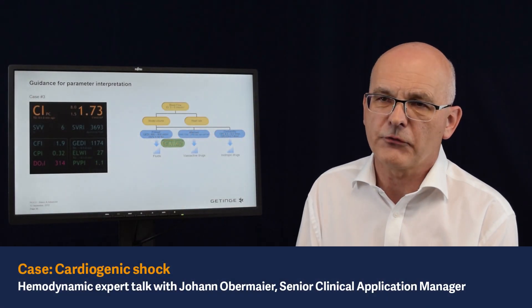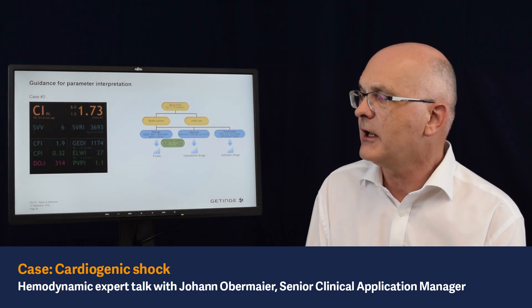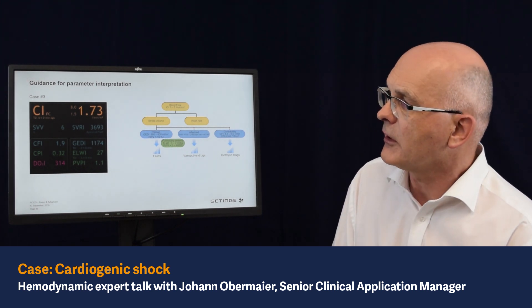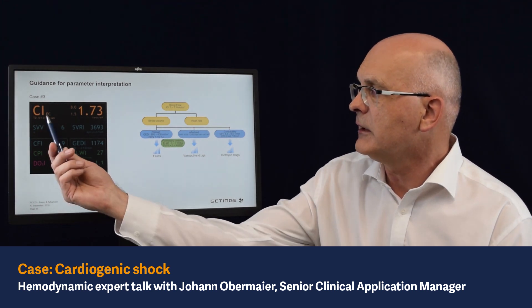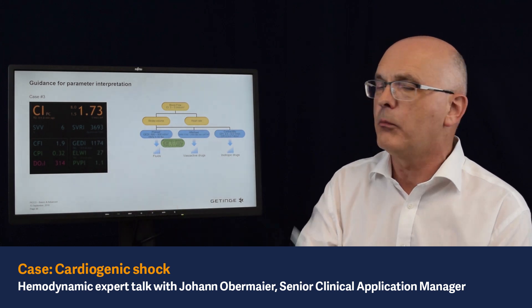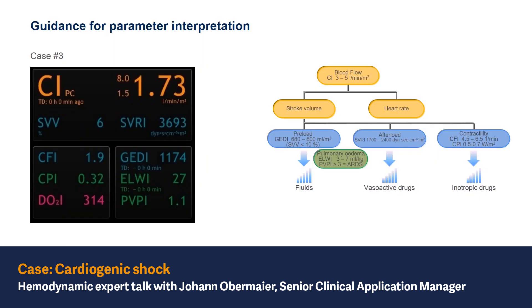Finally, case number three, where we have again different results. We have a cardiac index of 1.73 — a very low cardiac index, a very low blood flow. So there is an issue again with the blood flow.